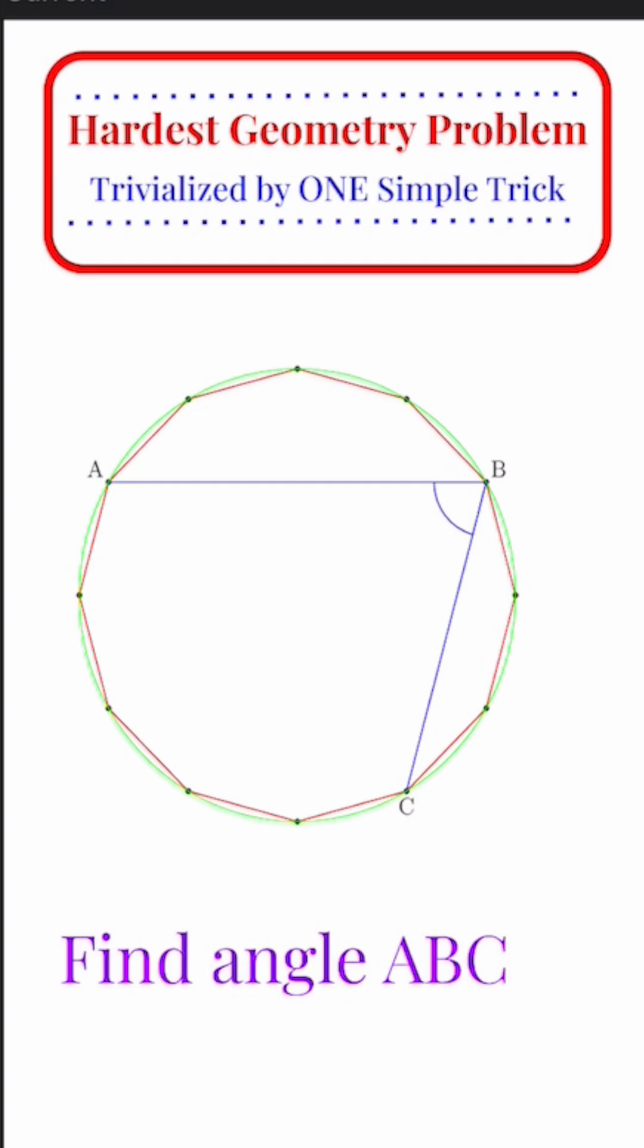Because now we can use the Inscribed Angle Theorem, which states that the measure of any inscribed angle in an arc is simply half the measure of the arc. Basically, the measure of ABC is half the measure of AOC, where O is the center of the circle. And this is true for any inscribed angle.